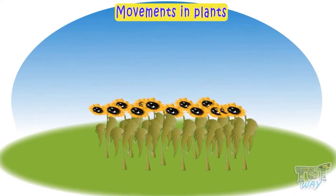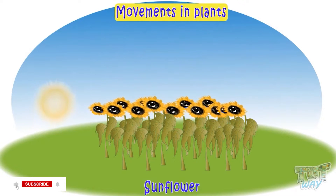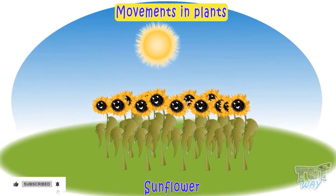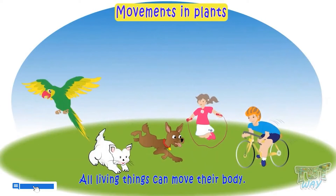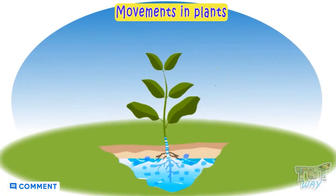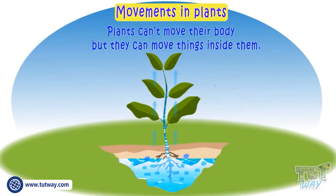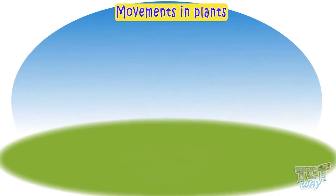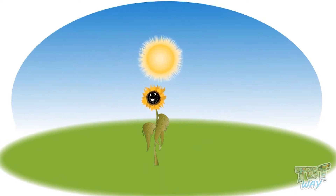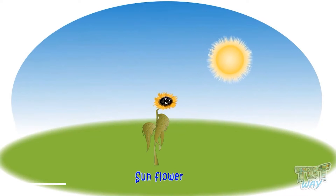Here's another example of movement in plants. In some flower plants, flowers move with the direction of the sun — their flowers always face towards the sun. So all living things can move their body or can move things inside them. Plants can move water and minerals from one part to another, and some plants like the sunflower can move their body to some extent.